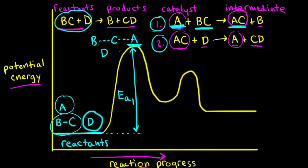If we assume that the collision has enough kinetic energy to overcome the activation energy, we'll form our intermediate AC and we'd also form B. The valley between our two hills represents the energy level of the intermediate. We would also have B present, and then we still have some D present — D still hasn't reacted yet.